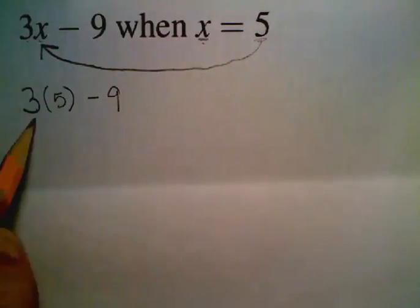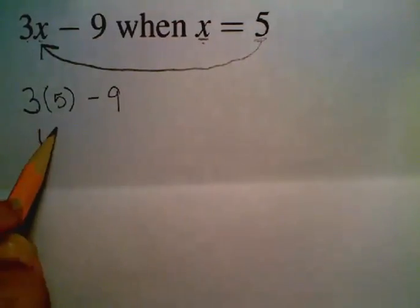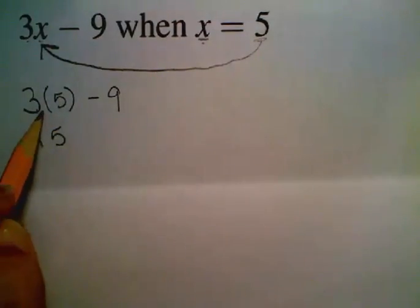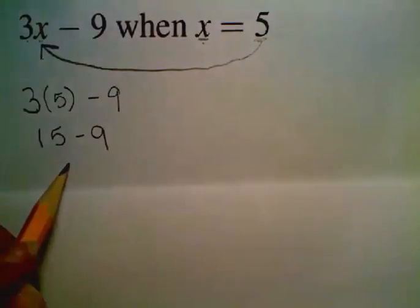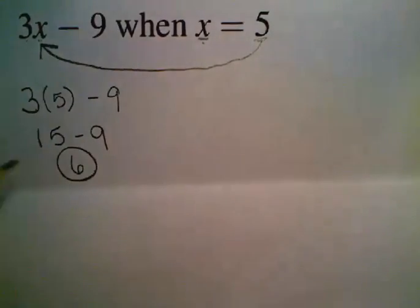So we have 3 times 5 minus 9. Alright, so now this is easy. 3 times 5 is 15. Remember we have to do multiplication before subtraction. And 15 take away 9 gives us 6 for our answer.